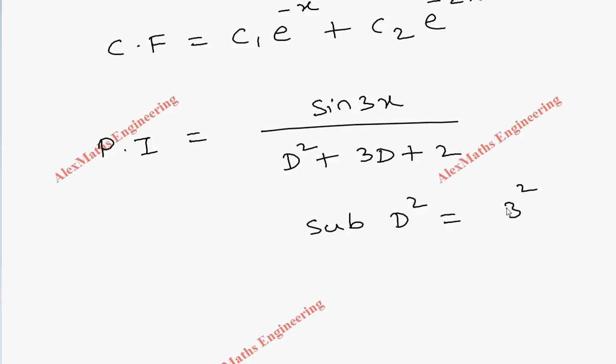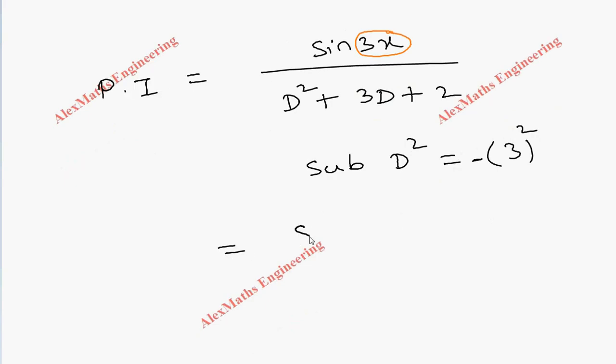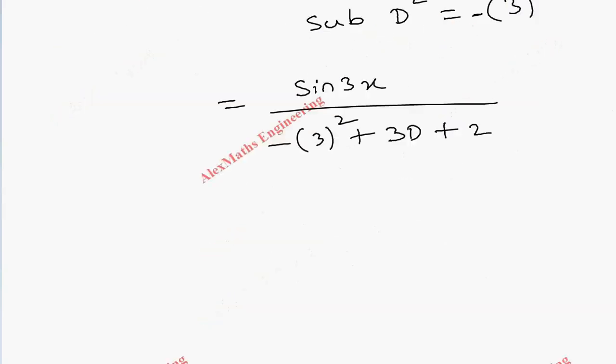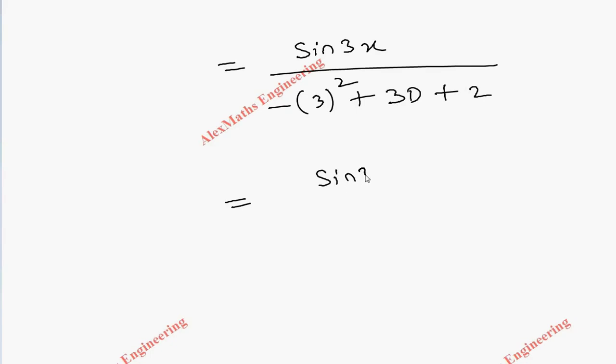As per the procedure, we have to substitute D² as 3² with a minus sign outside, because we have 3x here. Let's substitute. The numerator is sin(3x), and D² is -3² + 3D + 2. So totally we have sin(3x) divided by 3D - 7.